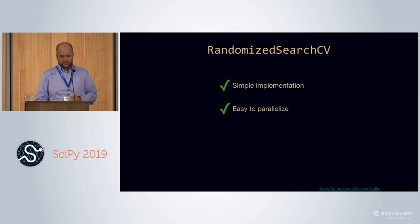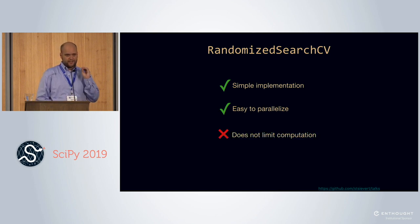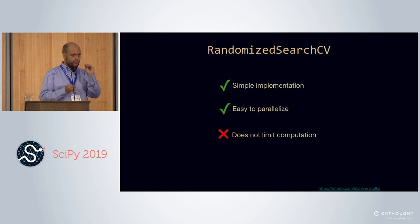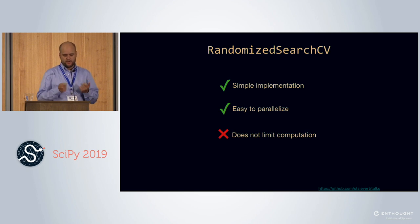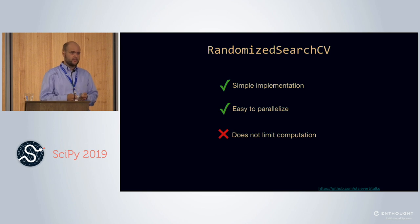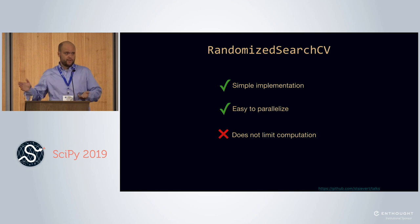This is great — it's very simple and easy to use. Things like joblib can parallelize it nicely. The one downside is that there are no limits on computation. It trains all four models to completion, which is annoying because we only care about one set of hyperparameters — the best-performing set. We don't care about the second best, third best, or definitely not the worst. But we train all those to completion.